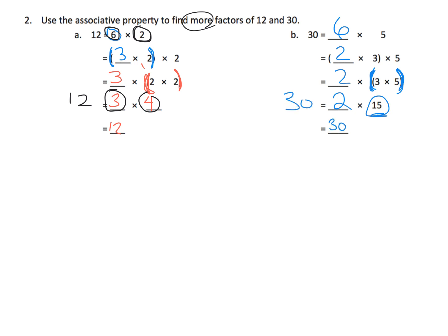And since 2 times 15 is 30, I could put that here as well, we now have some factors. We know that 6 and 5 are factors of 30. And we know that 2 and 15 are factors of 30.